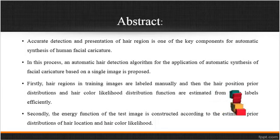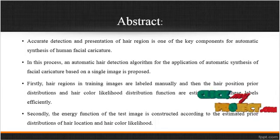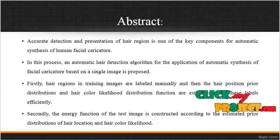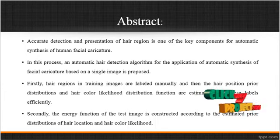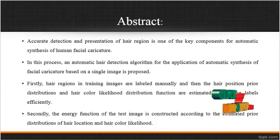Firstly, hair regions in training images are labeled manually, and then the hair portions' prior distributions and the hair color likelihood distribution functions are estimated from the labeled data efficiently. Secondly, the energy function of the test image is constructed according to the estimated prior distributions of hair location and the hair color likelihood. Hence, the main objective of this process is to detect the hair and the face regions separately.